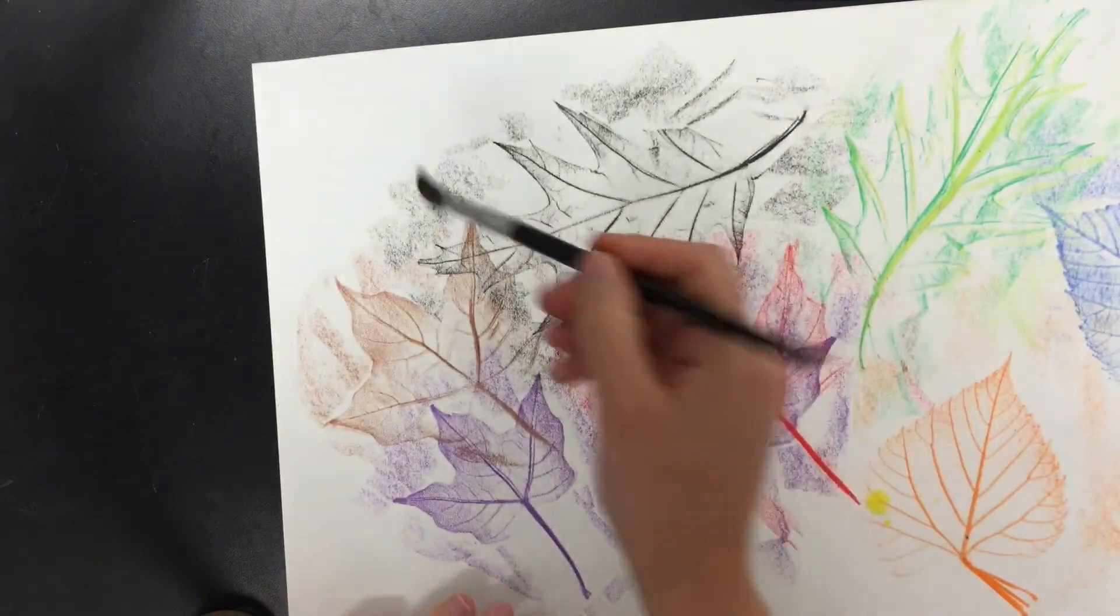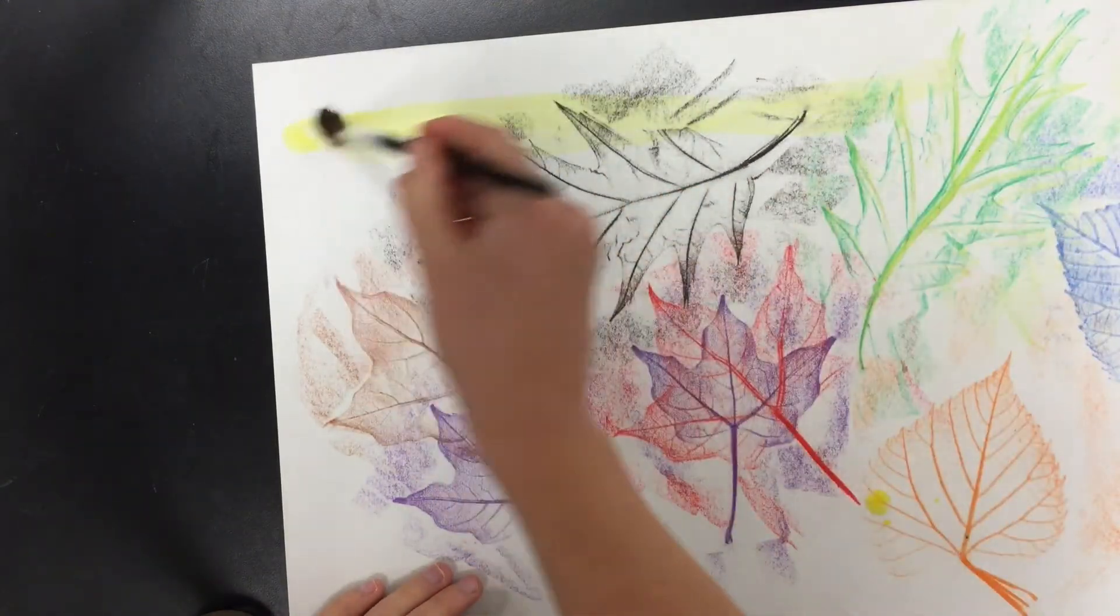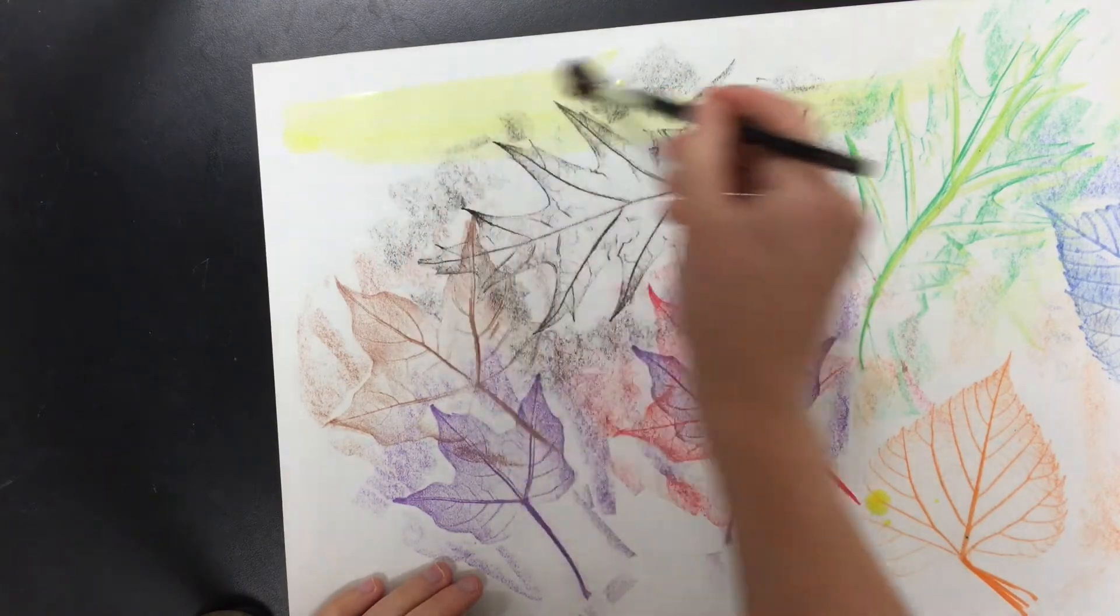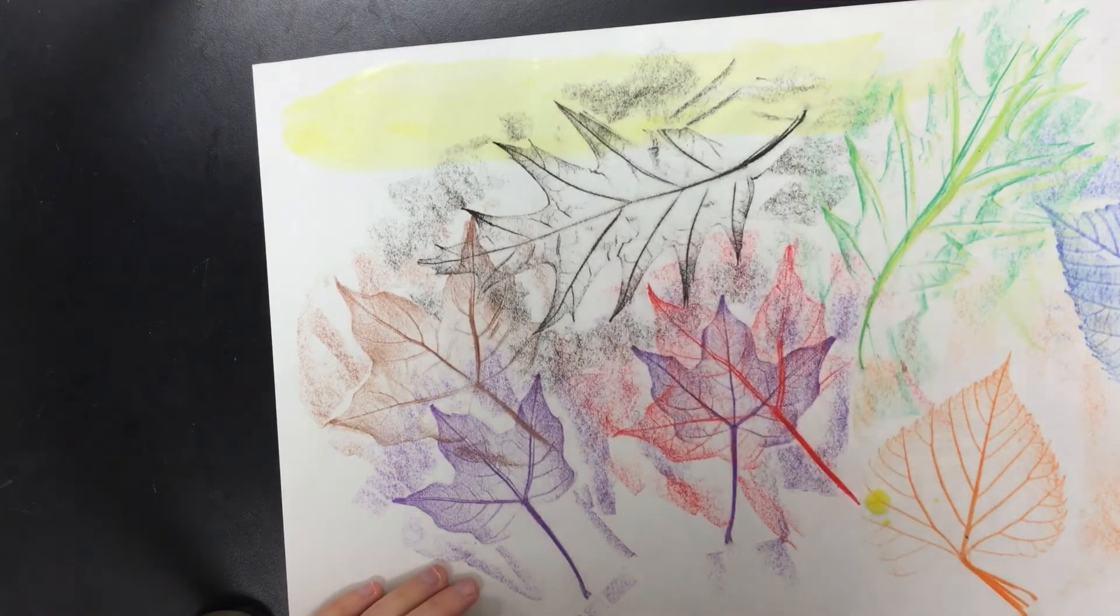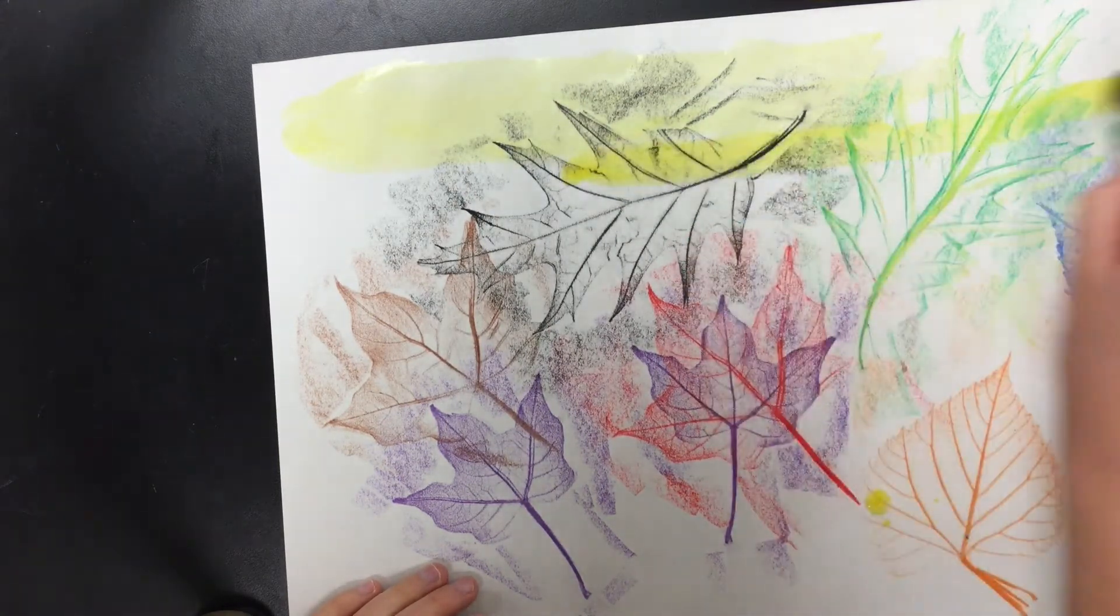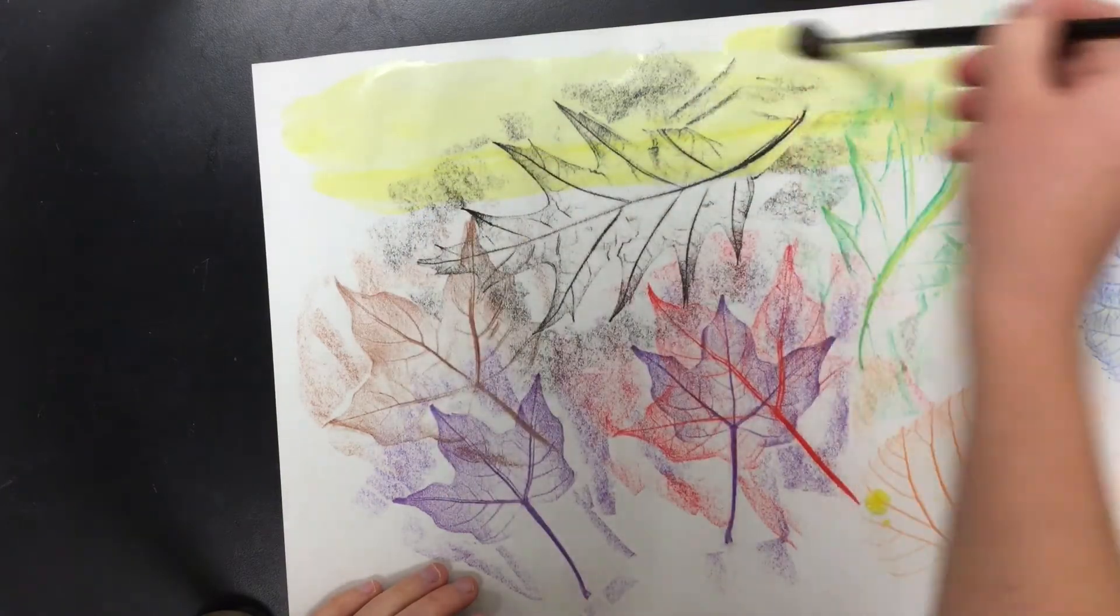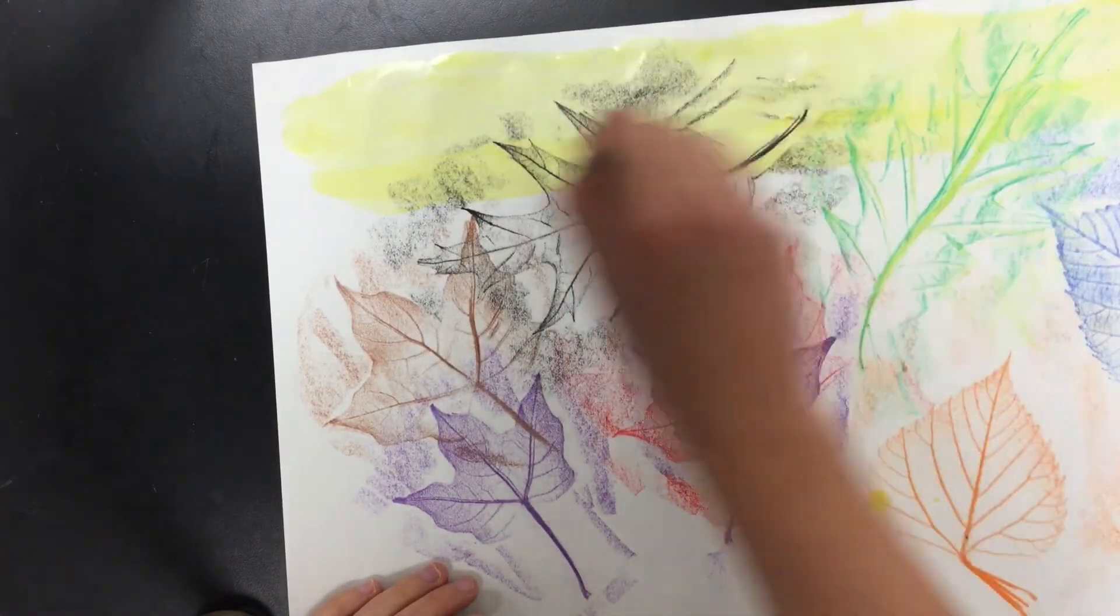When I spread the watercolor paint on my paper, I'm going to do it really gently and slowly back and forth, back and forth, just like this. Side to side, back and forth. You can grab more yellow here. Keep going with the yellow. I think it looks nice. Notice how the crayon still shows through.